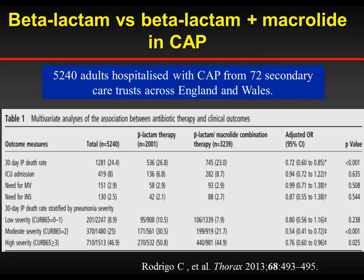What about community-acquired pneumonia? Is there any advantage using combination versus monotherapy? There are many papers supporting combination. The latest, published in Thorax, studied more than 5,000 patients hospitalized in England and New Orleans. They demonstrated that beta-lactam plus macrolide combination has no advantage in low-severity patients with CRB-65 score of 0 or 1, but there is a significant mortality advantage when CRB-65 score is at least 2.